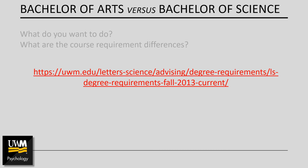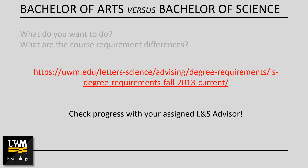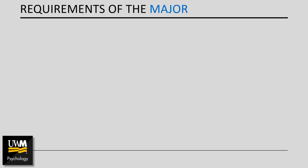If you'd like more specific information about the general letters and science degree requirements, check out the site that's referenced here. In addition, it's my strong recommendation that you meet regularly with your assigned letters and science advisor to confirm that you're making good progress and to plan for future semesters. As you're working to meet L&S degree requirements, it's also important to pay close attention to the requirements of the psychology major, so we'll go over those requirements briefly right now.